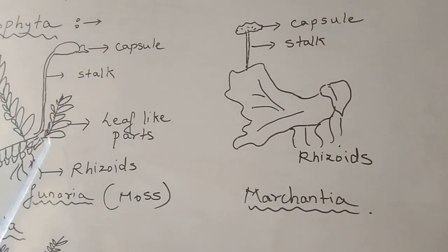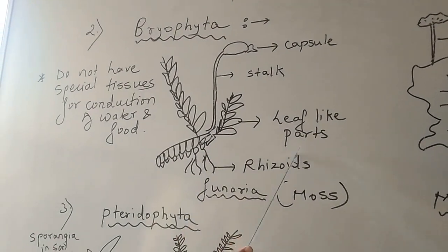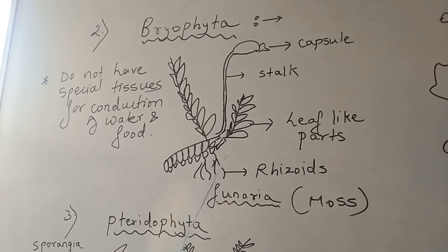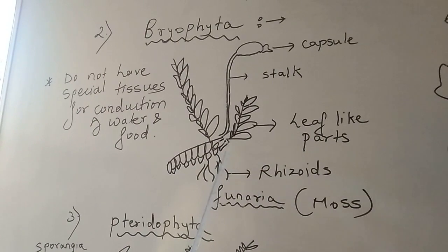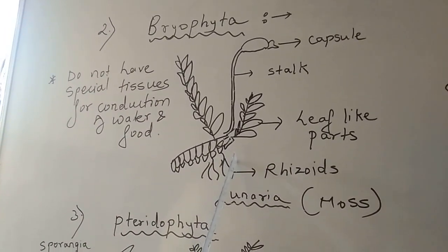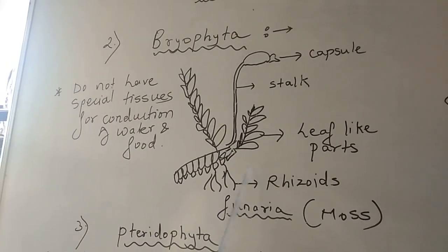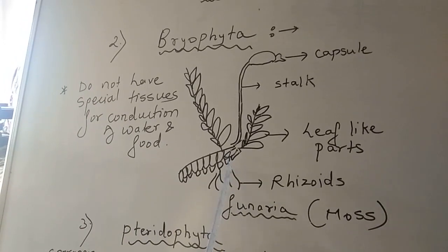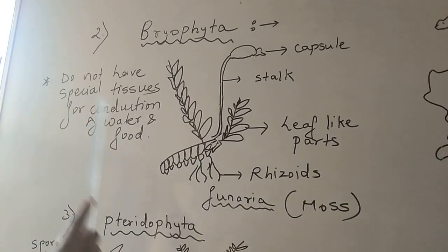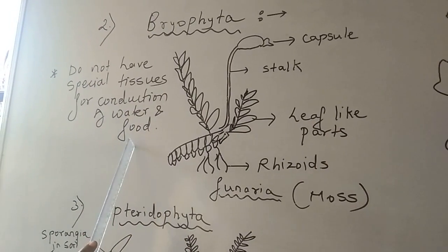So in both cases, you can say that they carry out a sexual type of reproduction. Similarly, they do not have special conducting tissue. The conducting tissues present in plants are xylem, which is responsible for absorbing water, and phloem, which is responsible for transporting food. In bryophytes, both xylem and phloem are absent.